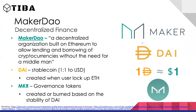MakerDAO is an organization built on Ethereum for lending and borrowing crypto without a middleman. It has two tokens: DAI, a stablecoin pegged one-to-one to the US dollar created when you lock up ETH as collateral, and MKR, the governance token that allows holders to vote on protocol changes.